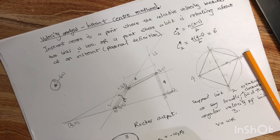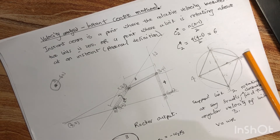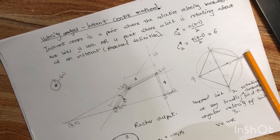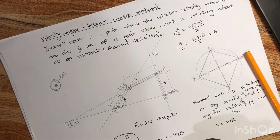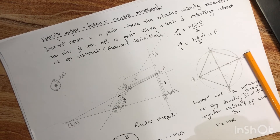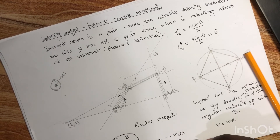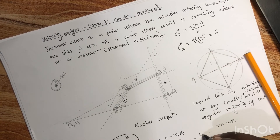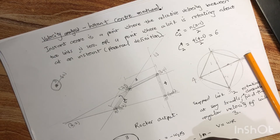In general, the ratio of angular velocities can be expressed as: omega_m / omega_n equals the ratio of distances between the relevant instant centers, with a sign indicating direction of rotation. This is the core formula used in the instant center method for velocity analysis of mechanisms.